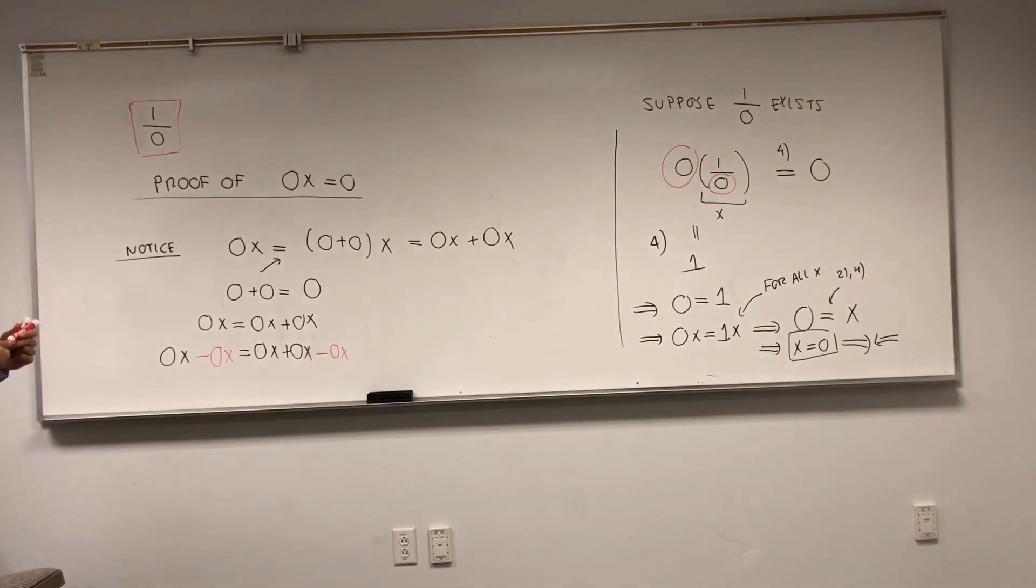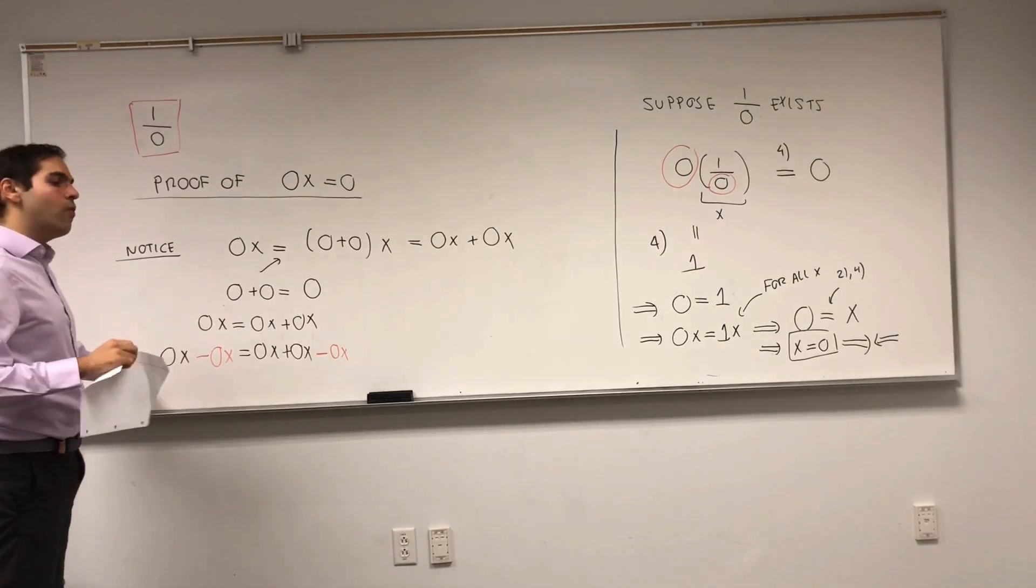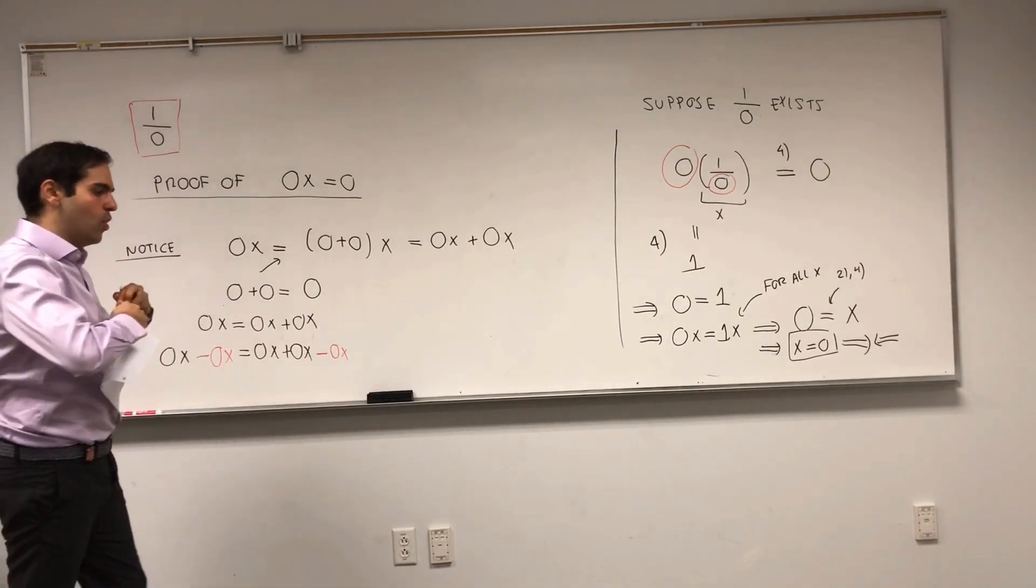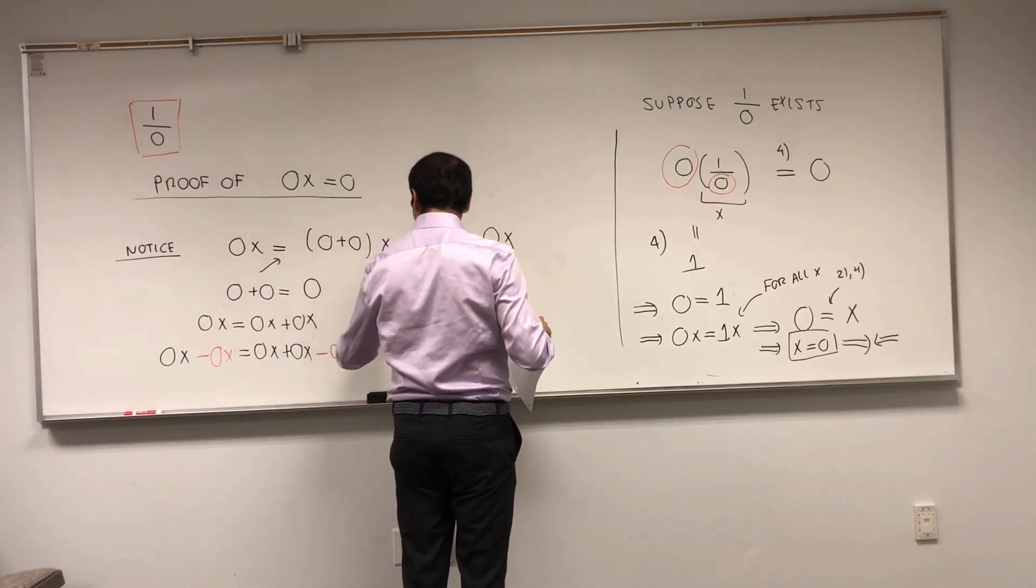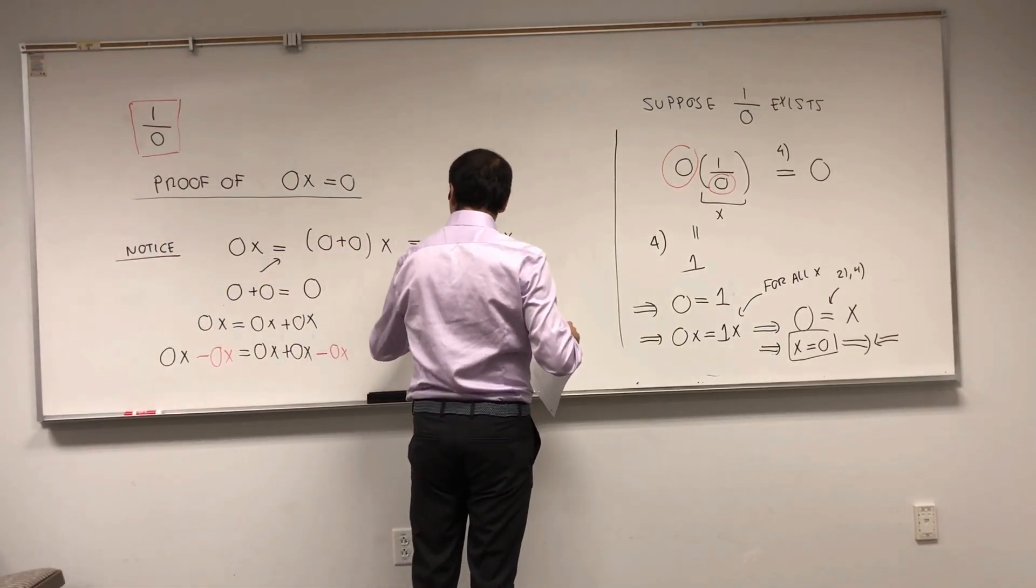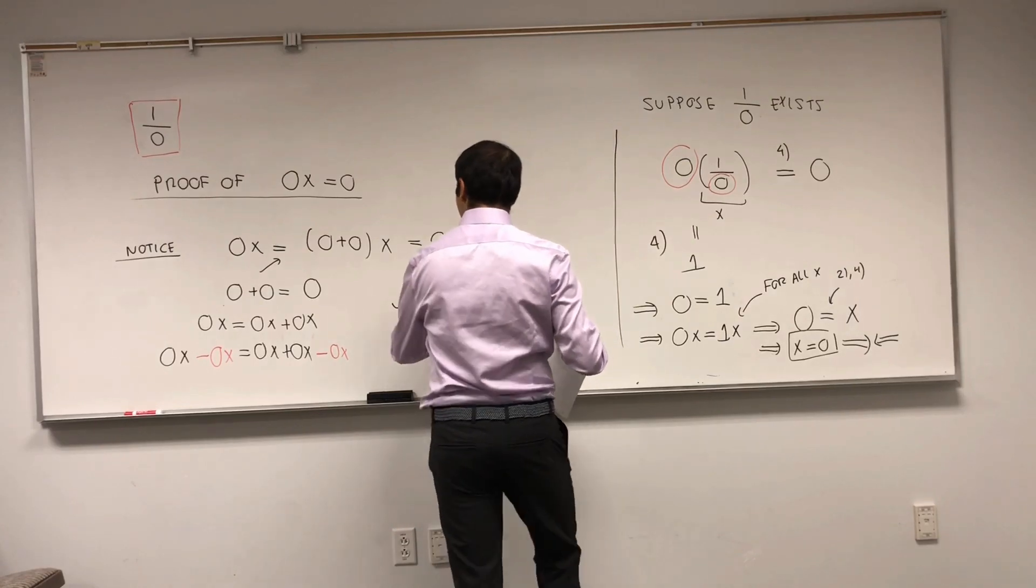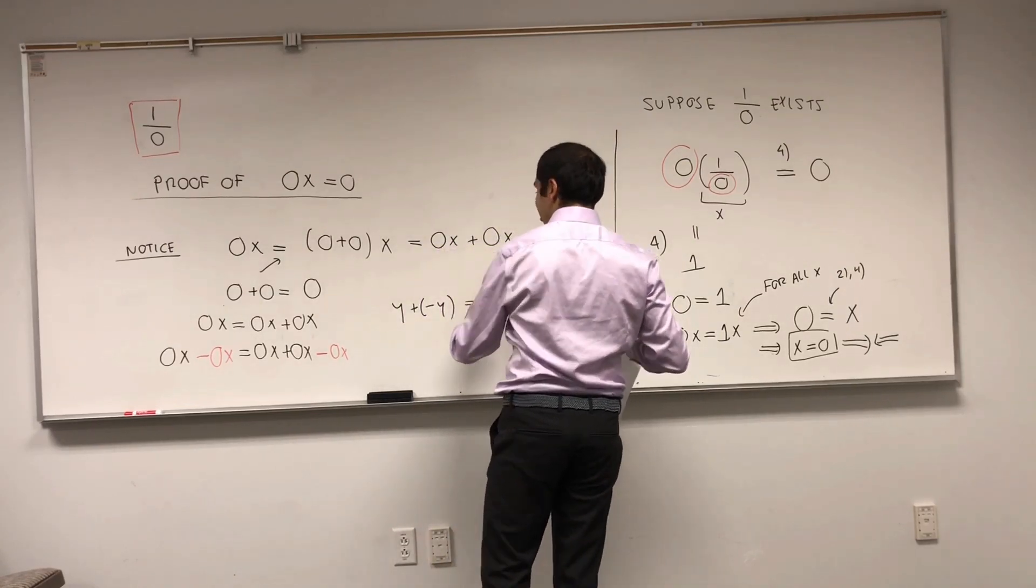And, just like 1 over x, which gives you, you know, 1 when you multiply it by x, in general, if you add minus y to y, you get 0. And, that is the definition of minus something. So, literally, you can cancel this out.